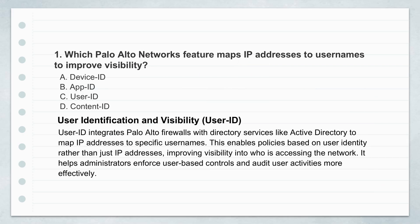Let's get into the actual tech — how modern firewalls are really changing the game. We're moving way beyond just blocking ports like in the old days. We're talking features that give you much better visibility and control. A key example is User ID, a Palo Alto Networks feature that maps IPs to usernames. Instead of just seeing an IP address, which could be anyone, you know who it belongs to. Your security policies can be based on identity — like the marketing group gets access to this, finance gets that — regardless of the actual device they're using. It works by integrating with things like Active Directory, pulling that user information. It's really about securing the person, not just the machine.